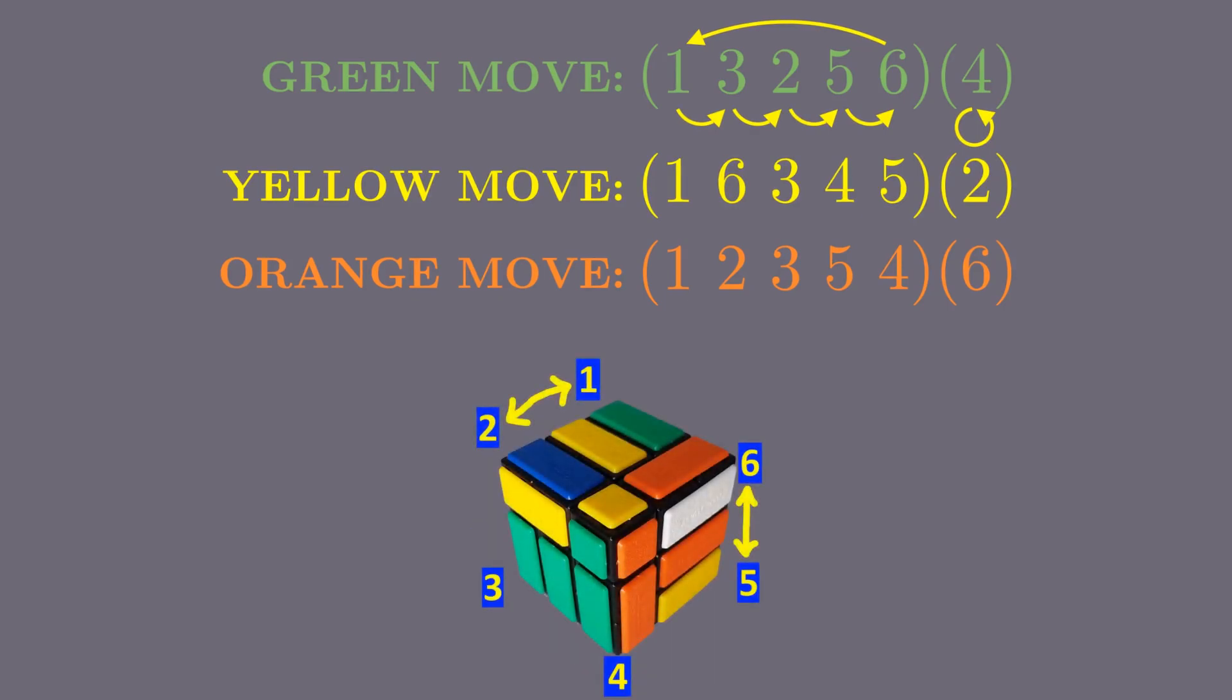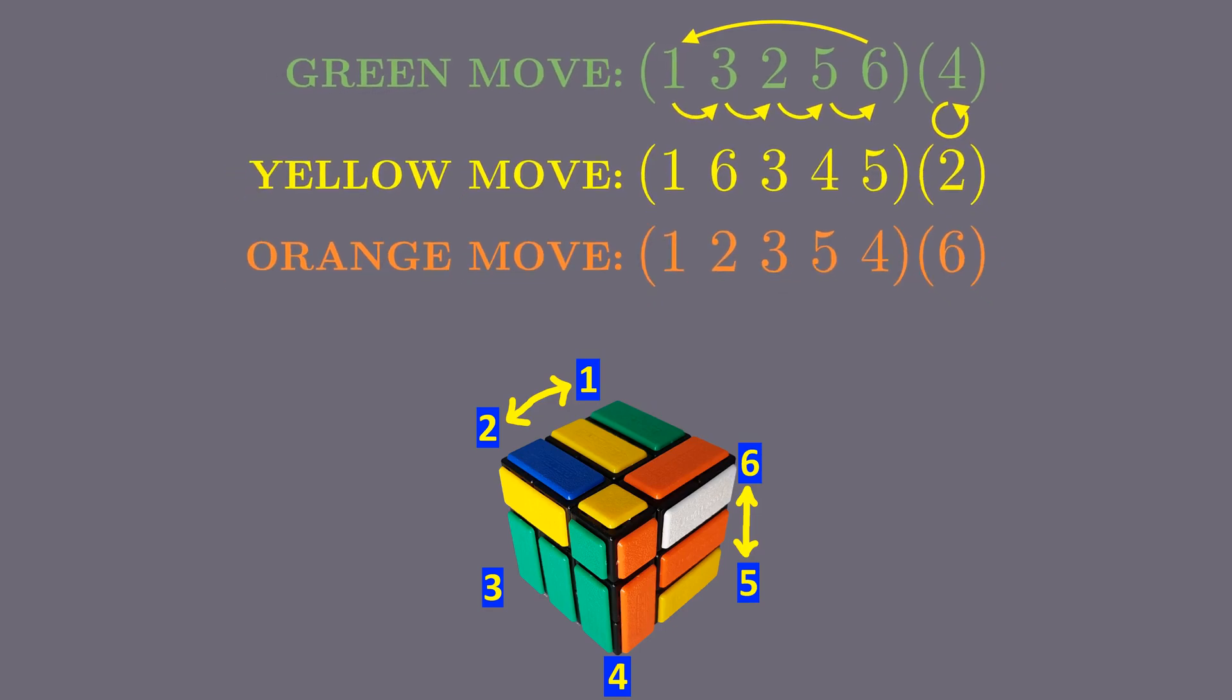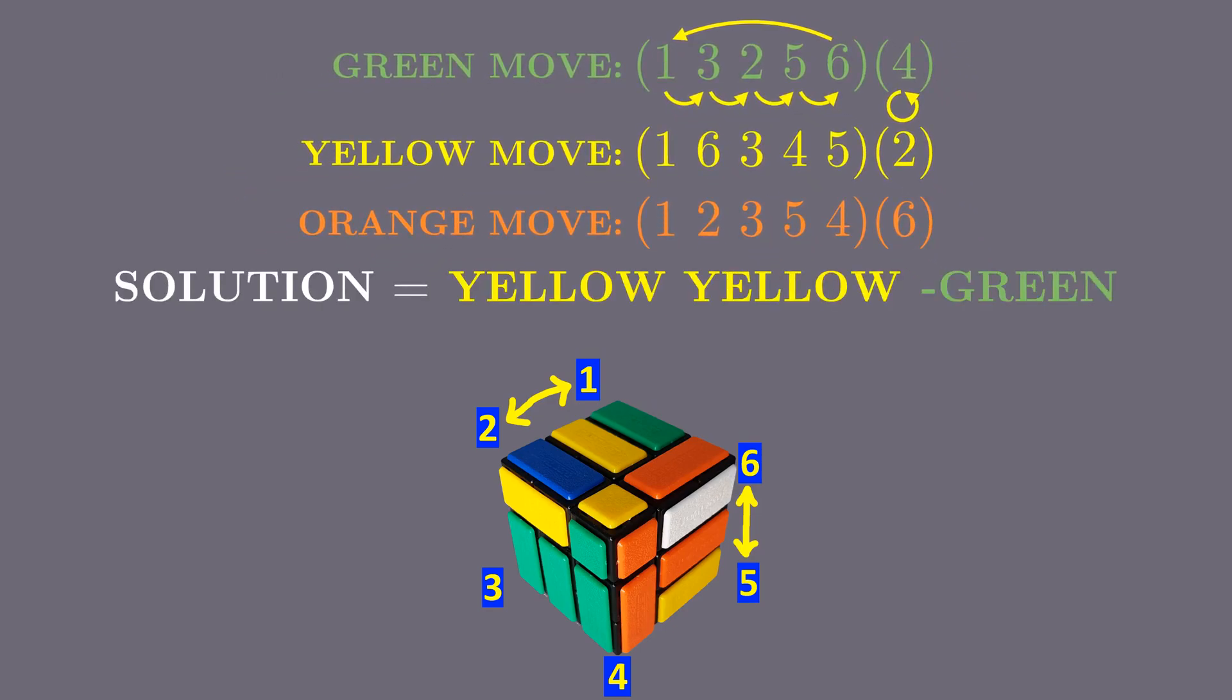For example, let's have a scramble with two pairs of swapped blocks. You can check it is solved with yellow move done twice followed by green move done backwards.